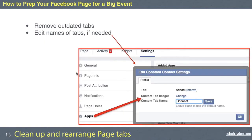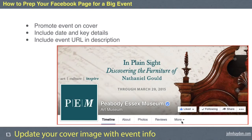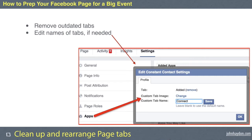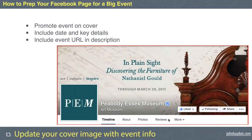The next step is to clean up and rearrange the page tabs — those little tabs underneath your cover image like Timeline, About, Photos, and Reviews. You want event-related or important tabs to be easily visible when people visit. To remove tabs, go to Settings, click on Apps, and hit the X next to any tab. You can also click Edit to change a tab's name or settings. You can't rename About, Photos, or Reviews, but any custom or third-party tab can be renamed.